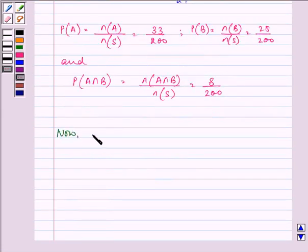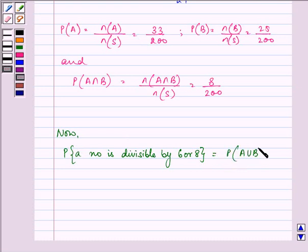Now, we need to find out probability that a number is divisible by 6 or 8. That is equal to probability of A plus probability of B minus probability of A intersection B.